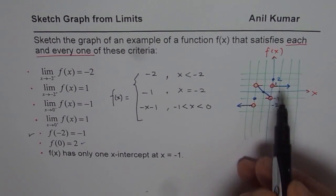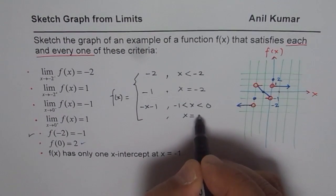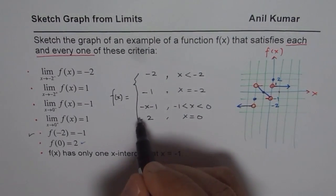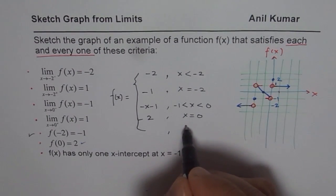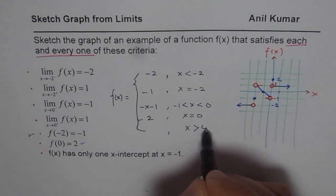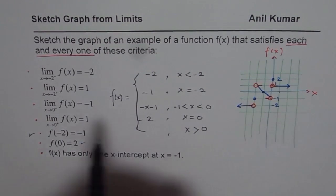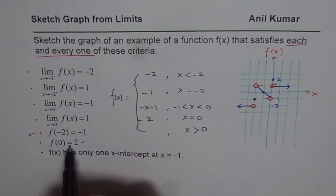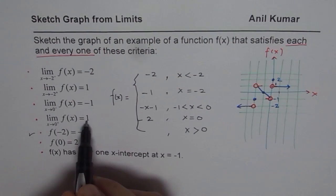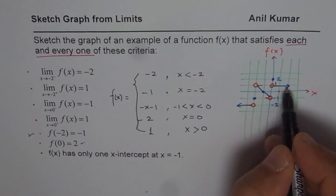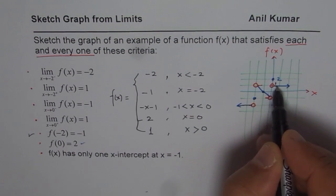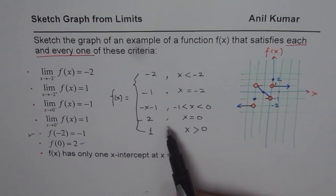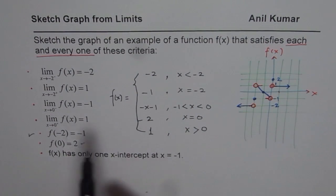When x = 0, the value of the function is 2. When x > 0, the value of the function is 1, since approaching 0 from the right gives +1 and the graph continues as a horizontal line. So this piecewise function describes the graph and satisfies all the given conditions.